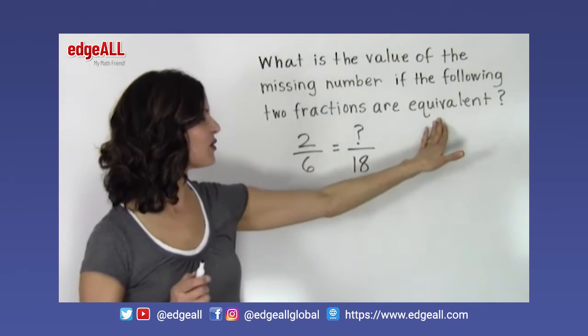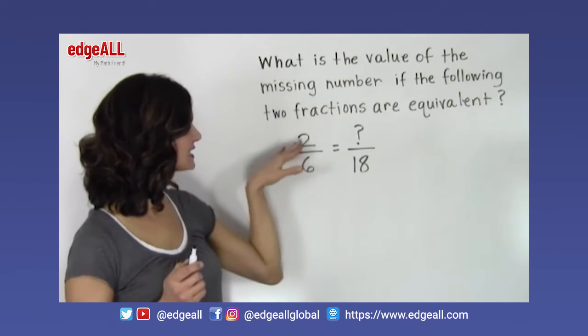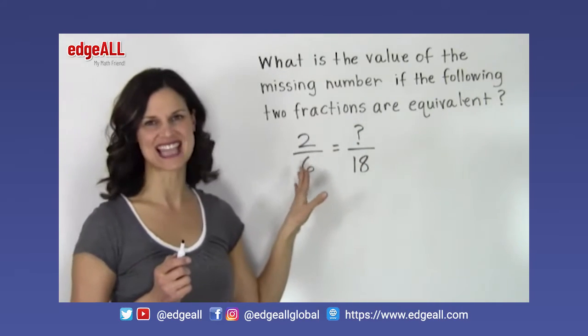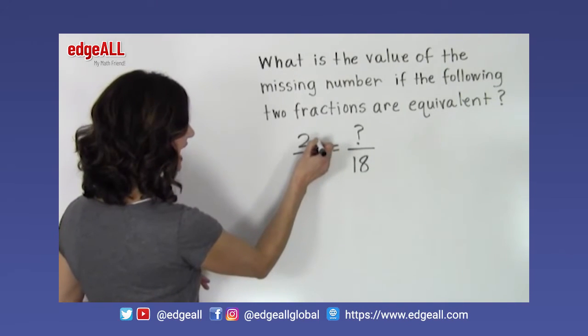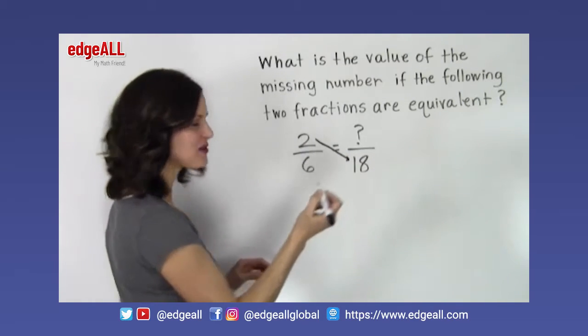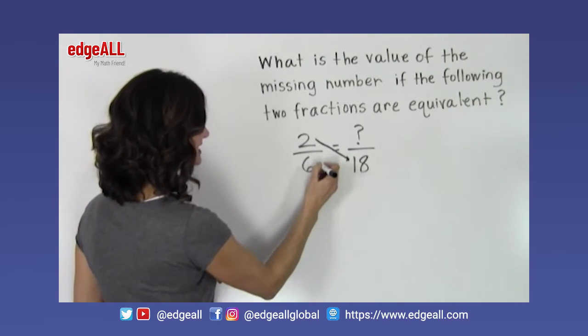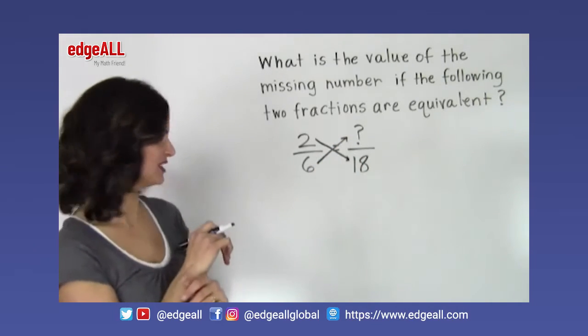And since we know they are equivalent, we also know that the cross product should be the same. So we know that when we multiply this numerator by this denominator, it needs to be equal to multiplying this denominator by this numerator for our cross multiplication.